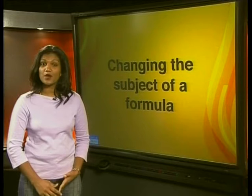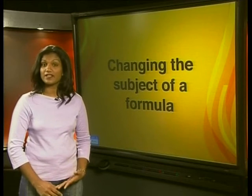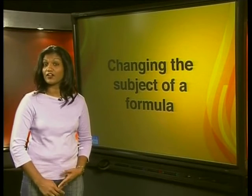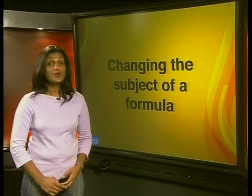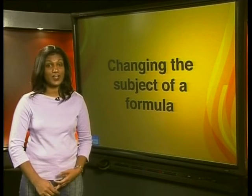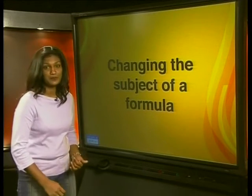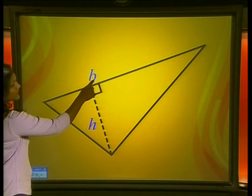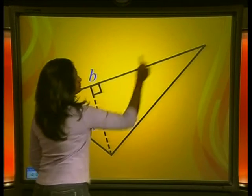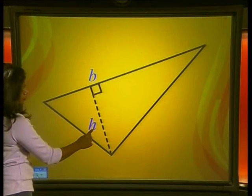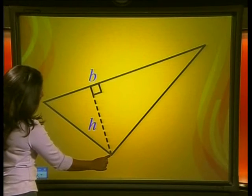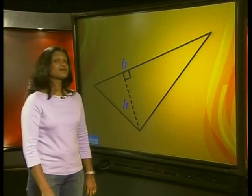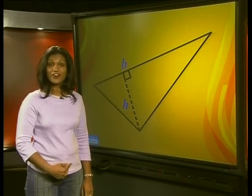Let's use a simple example to work out how to change the subject of a formula. We will use the formula to calculate the area of a triangle. Do you remember how to calculate the area of a triangle? Look at this diagram. Here, B represents the length of this side. H is the altitude and it is drawn from the vertex perpendicular to this side. Now can you write a formula for the area of this triangle?